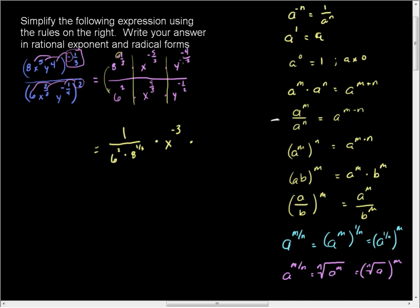Then, I have to do the same thing with the y's. And so I take my y to the negative four-thirds over y to the negative one-half. And so I have to subtract one-half off of negative four-thirds. To do that, I have to get a common denominator, which is 6. So this is going to be negative eight minus three, which is negative eleven-sixths. And so this is going to give me y to the negative eleven-sixths.